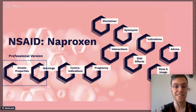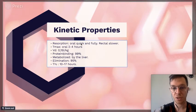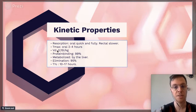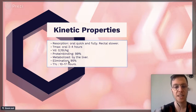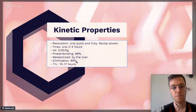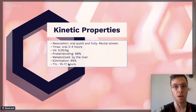Regarding kinetic properties: Naproxen is absorbed orally quickly and fully; rectally it's much slower. Tmax orally is 2 to 4 hours. Protein binding is 99%. It's metabolized by the liver and 95% is eliminated by the kidneys via urine. The half-life is 10 to 17 hours.